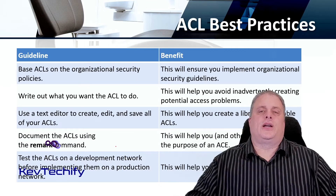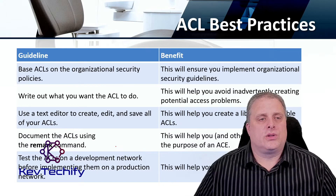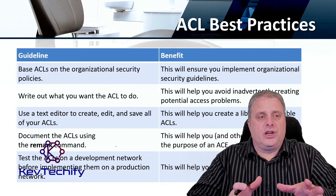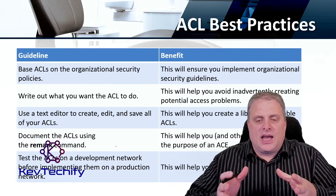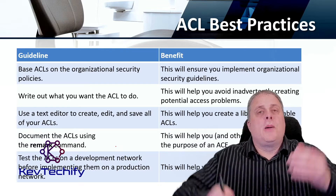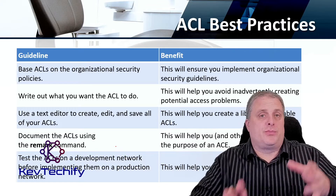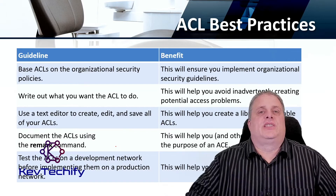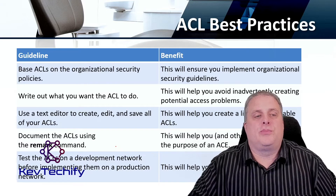There are several best practices when it comes to access control lists. The first one: base access control lists on the organizational security policy. Look at your security policy and then base your ACLs on that. If it says only HR people should have access to the HR server, build an access control list that enforces that. You may need to put HR people in their own subnet, and then that subnet only has access to the HR server.